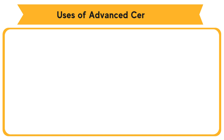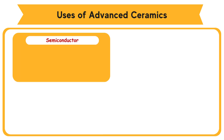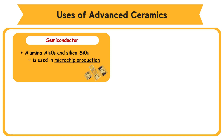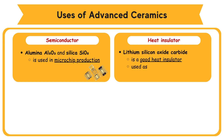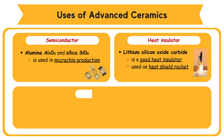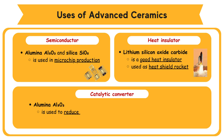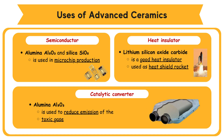Uses of advanced ceramics. Semiconductor — advanced ceramics containing alumina Al₂O₃ and silica SiO₂ is used in microchip production. Heat insulator — lithium silicon oxide carbide is a good heat insulator that can withstand very high heat; it is used as a heat shield for rockets. Catalytic converter — alumina Al₂O₃ is used to reduce emission of toxic gases and air pollutants in exhaust pipes.